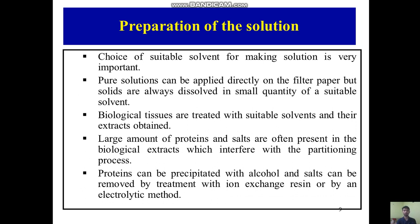For preparation of the solution, we need to prepare it with a suitable solvent. Pure solutions can be applied directly on the filter paper, but solids must always be dissolved first — we cannot use solids directly. Biological tissues are treated with a suitable solvent and the extract is obtained. Large amounts of proteins and salts are often present in biological extracts, which interfere with the partition process. Proteins can be precipitated with alcohol, and salts can be removed by treatment with ion-exchange resin or by an electrolytic method.